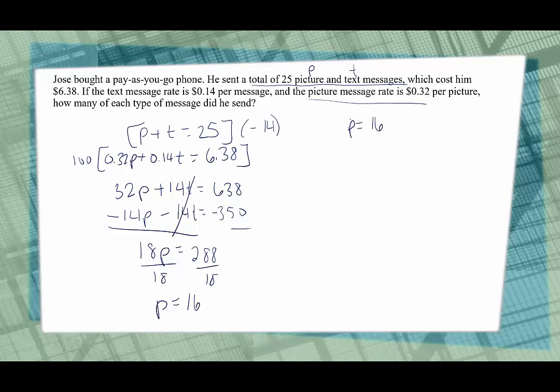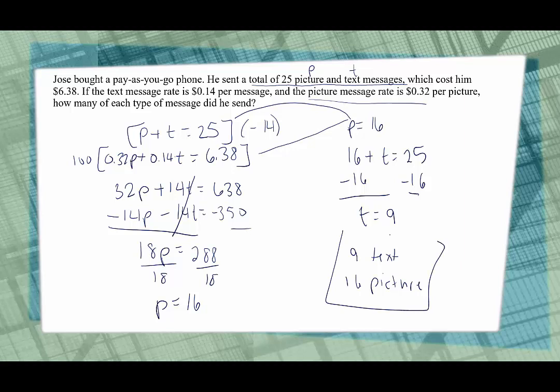Now we know he sent 16 picture messages, we're going to take that knowledge and plug it back into one of the original equations. You can choose either one, top one to me looks a lot friendlier, and we have 16 plus T is equal to 25. I subtract 16 from both sides and we figure out that he sent 9 text messages. So we have 9 text and 16 picture messages. And if you want to, you can check your work by plugging into that second equation and make sure that by plugging in 9 for T and 16 for P that the total adds up to six dollars and 38 cents. These have been applications of systems of equations. Thank you for stopping by.